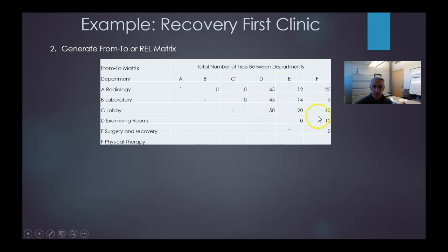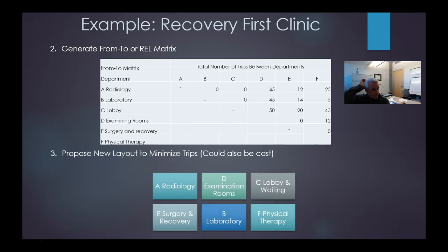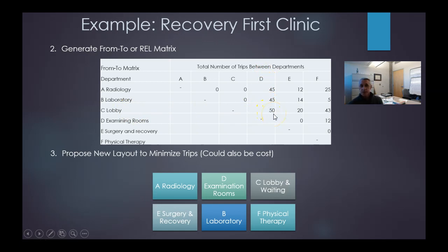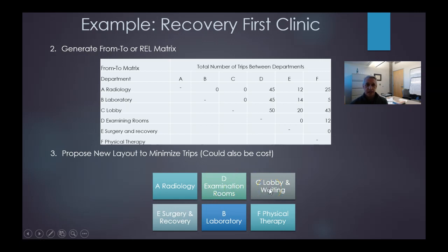For small systems like this, when doing trial and error, the easiest approach is: the larger the number of trips, the closer those departments should be. So you look at the highest scores. For example, C (the lobby) and D (examination rooms) have the highest score of 50, so we should prioritize placing C and D right next to each other — one unit apart, where one unit represents a 25 by 25 area.